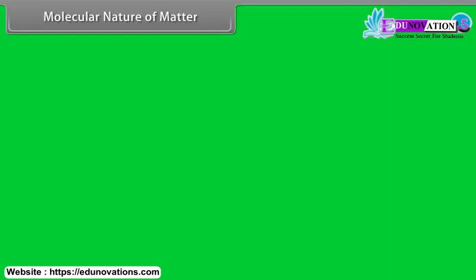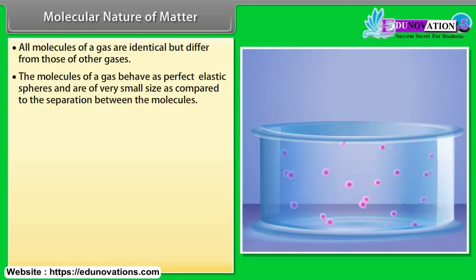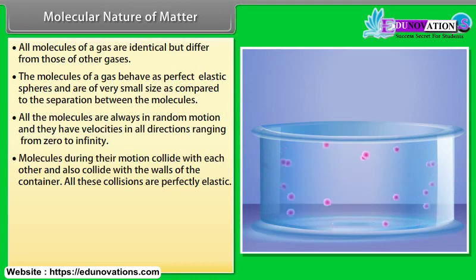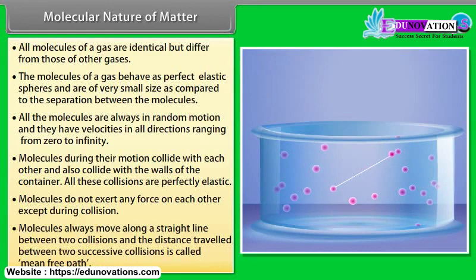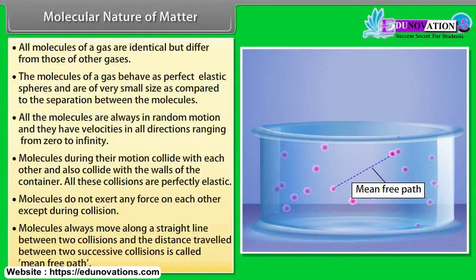Molecular nature of matter: All molecules of a gas are identical but differ from those of other gases. The molecules of a gas behave as perfect elastic spheres and are of very small size as compared to the separation between the molecules. All the molecules are always in random motion and they have velocities in all directions ranging from zero to infinity. Molecules during their motion collide with each other and also collide with walls of the container. All these collisions are perfectly elastic. Molecules do not exert any force on each other except during collision. Molecules always move along a straight line between two collisions and the distance traveled between two successive collisions is called mean free path.